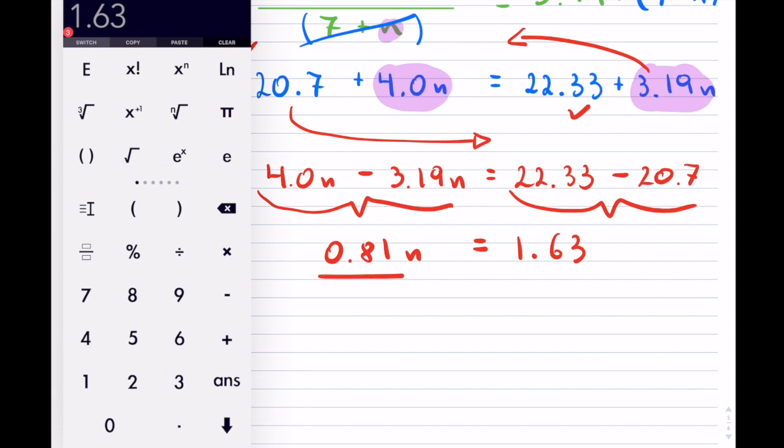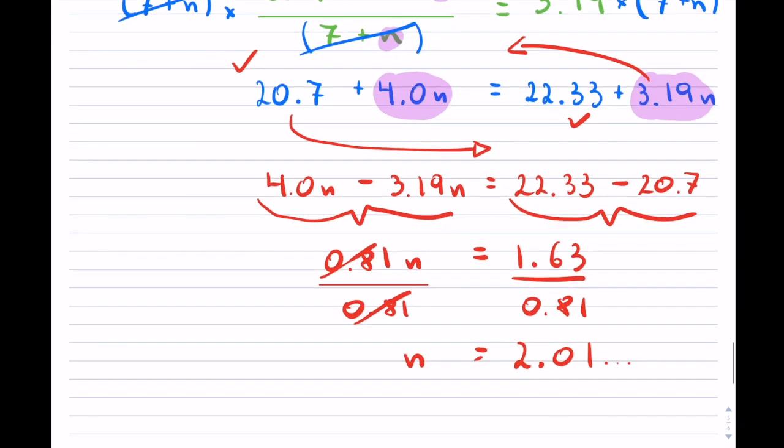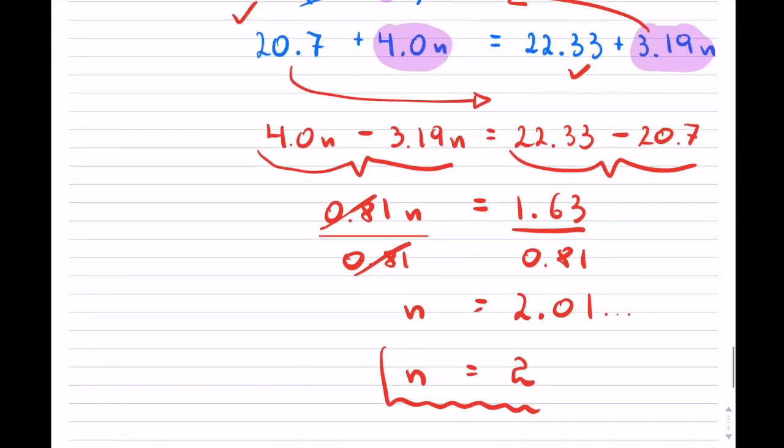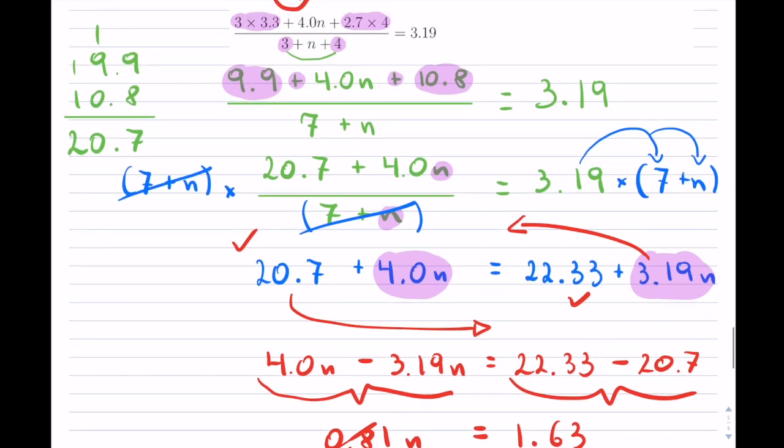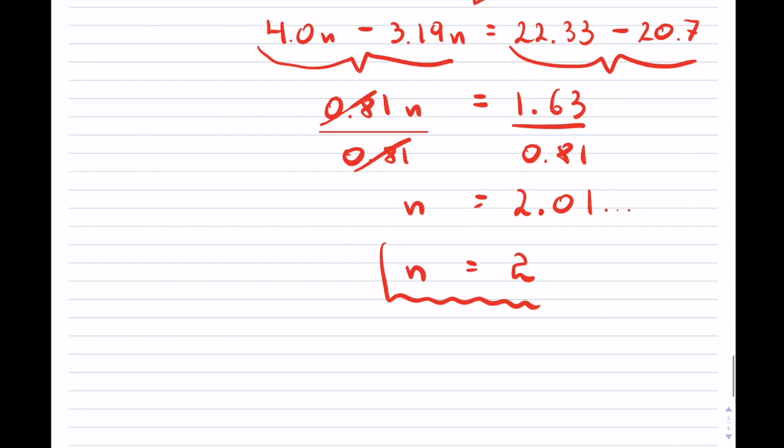Okay, now dividing both sides by 0.81 to get rid of that, and so that yields now 0.81, it's going to be, so this is 2.01 and so on, but they did want us to round to the 1. So notice, round it to the 1. So my answer n is equal to 2. And that's how you go about in solving these equations where they have the variable both in the numerator and denominator. All right, so thank you for watching, everyone. I hope that you found it useful.